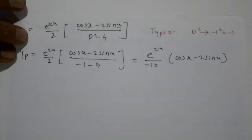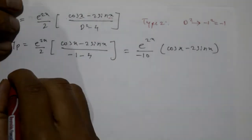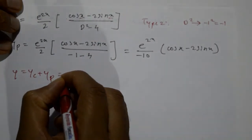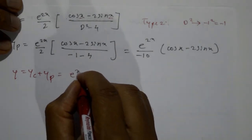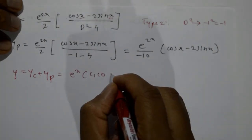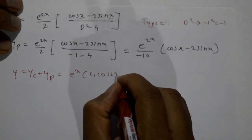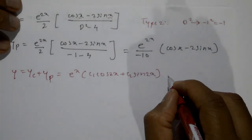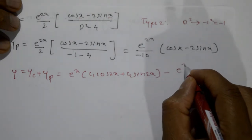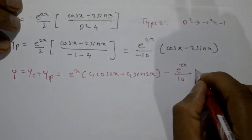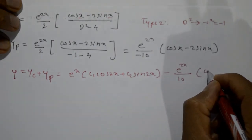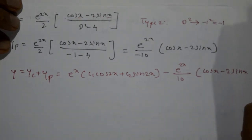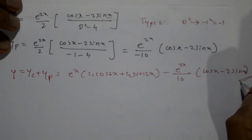The complete solution is y = yc + yp = e^x(c₁cos 2x + c₂sin 2x) - (e^(2x)/10)(cos x - 2sin x). This is the required solution.